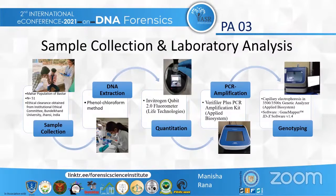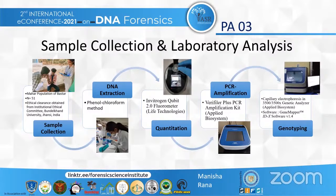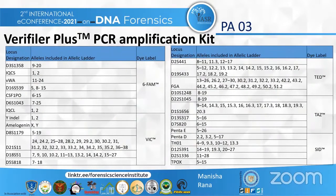DNA from the samples was isolated by the organic phenol-chloroform method. Prior to amplification, DNA was quantified using the Invitrogen Qubit 2.0 fluorometer by Life Technologies. DNA amplification was carried out using the Verifiler Plus multiplex STR kit with prescribed reaction volumes and thermal cycling conditions in a Veriti 96-well thermal cycler by Applied Biosystems. Capillary electrophoresis of the amplified product was processed in the 3500 XL Genetic Analyzer by Applied Biosystems. Genotypic data were analyzed using GeneMapper IDX software version 1.5. The whole laboratory analysis was carried out at State Forensic Science Lab, Sagar, Madhya Pradesh.